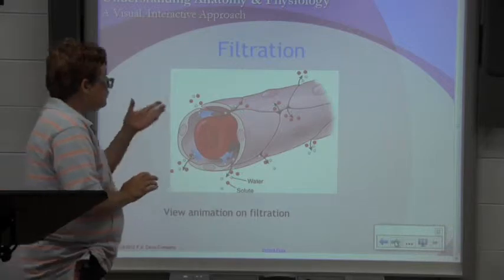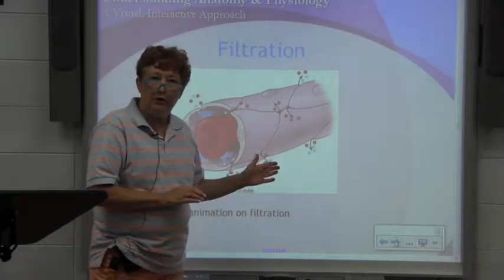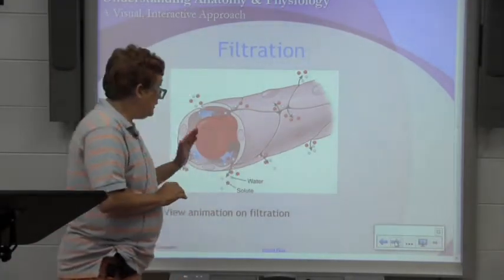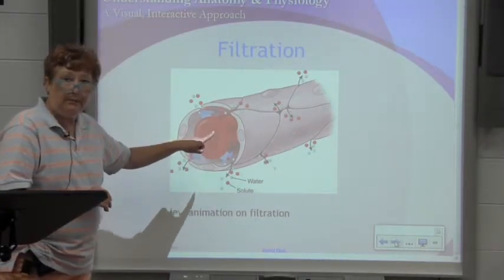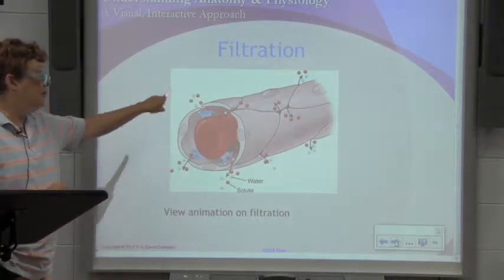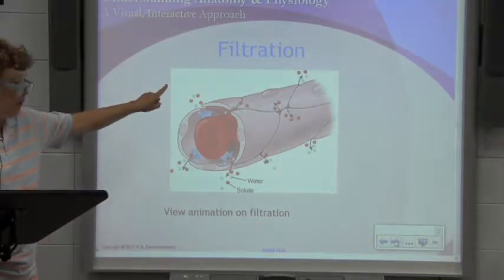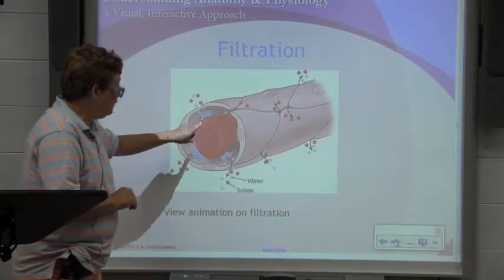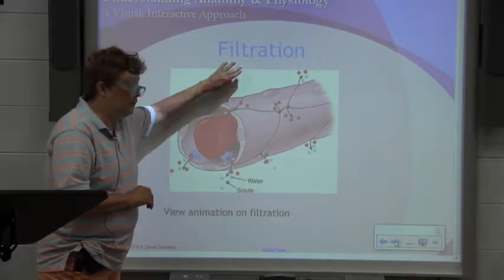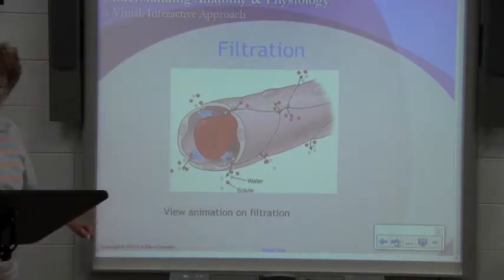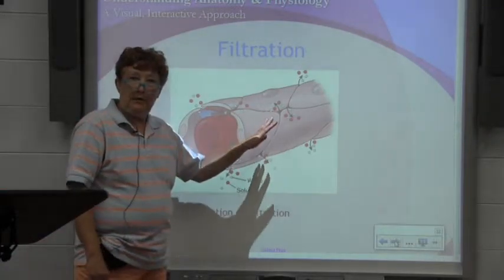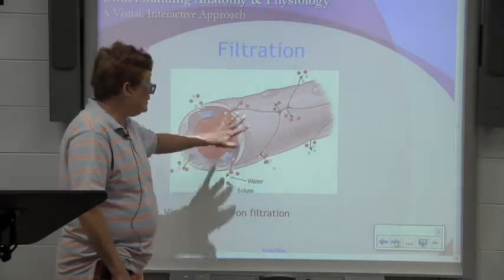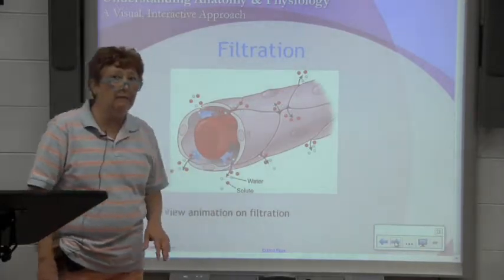Filtration requires pressure. It is an example of when you have particles — in this instance they're showing red blood cells — that can move across under pressure, being forced through the membrane from an area of higher pressure to an area of lower pressure outside. An example of this in our bodies is the kidneys, and when we study the urological system and talk in depth about the kidney, this concept is going to become very important.